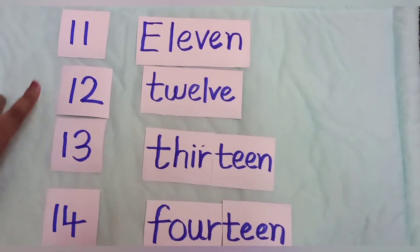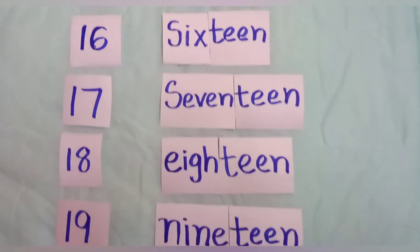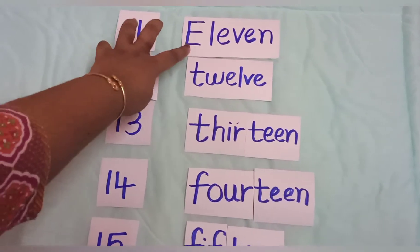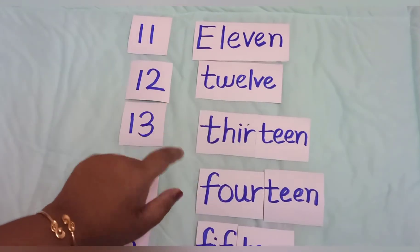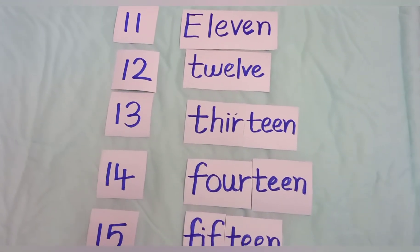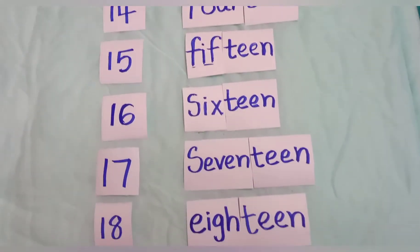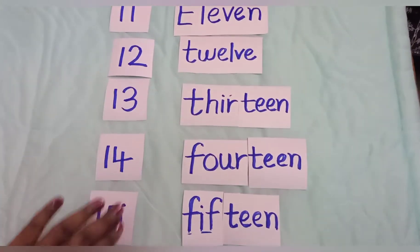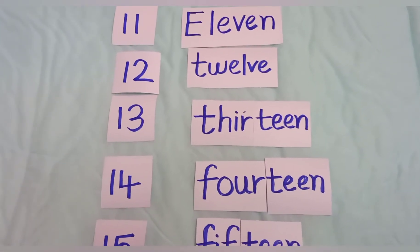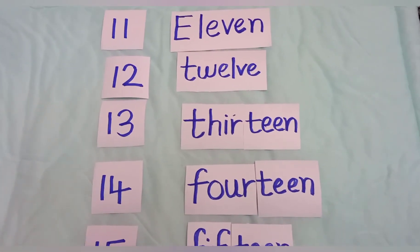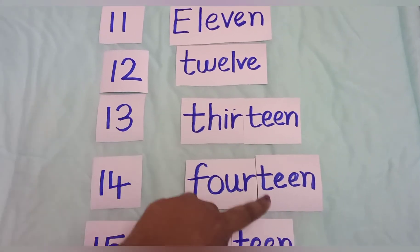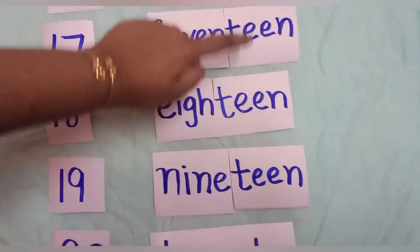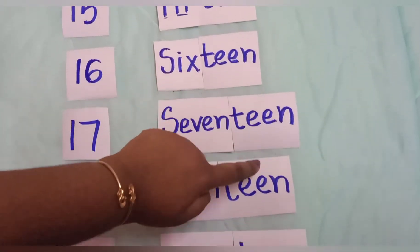So these are the number names from 11 to 20. You have to learn only 11, 12, and 20 — these three are different. From 13 to 19 it is very easy. The ending sound teen comes for all: 13, 14, 15, 16, 17, 18, 19 — teen, teen, teen, teen, teen, teen, teen.